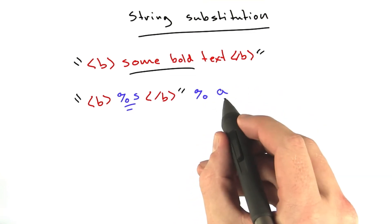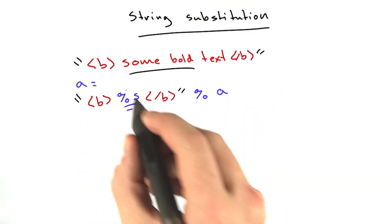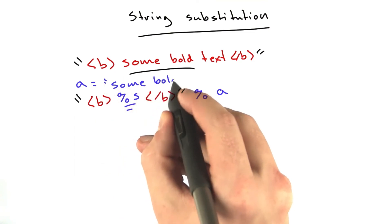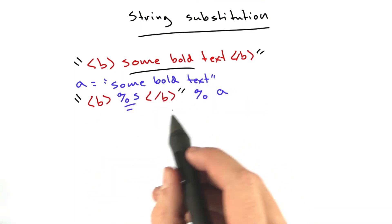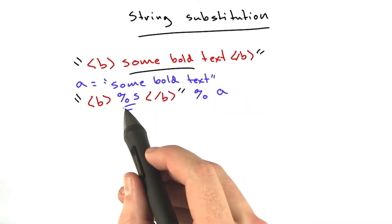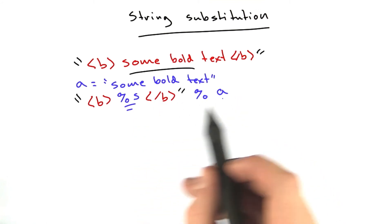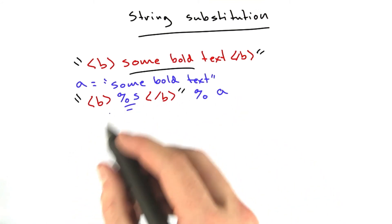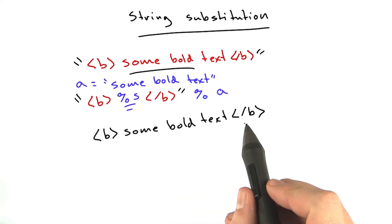If this were instead A and A equaled some bold text, when we print this string, when we print quote b %sb %a, we'll actually get output that looks like this. This is how it can generate the string.